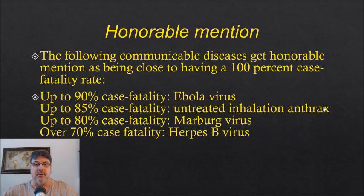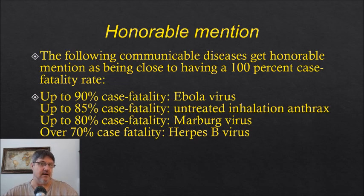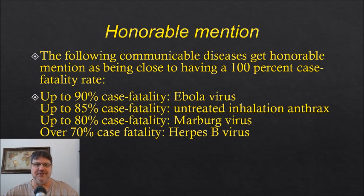There are some honorable mentions. The following communicable diseases get honorable mention as being close to having a 100% case fatality rate, and this includes Ebola virus, untreated inhalation anthrax, Marburg virus, and herpes B virus. I hope you enjoyed this, and if you have any other ideas or anything I really left out of the top five, let me know in the comments below. Go ahead and subscribe, share it with your friends, and I'll see you next time.